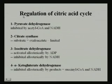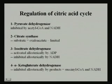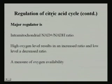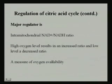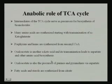The regulation of the citric acid cycle involves four key enzymes: pyruvate dehydrogenase, citrate synthase, isocitrate dehydrogenase, and alpha-ketoglutarate dehydrogenase. The intramitochondrial NAD/NADH ratio is a major regulatory factor — high oxygen levels result in an increased ratio, while low oxygen levels result in a decreased ratio, reflecting oxygen availability.